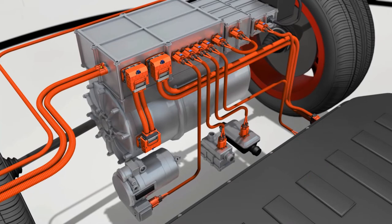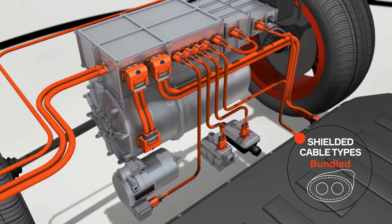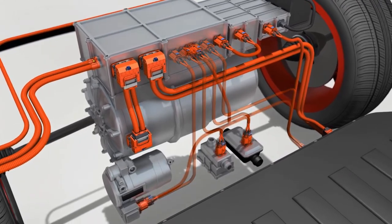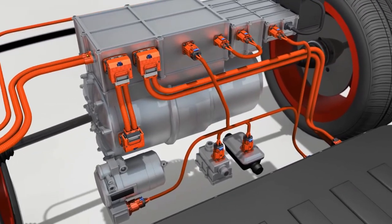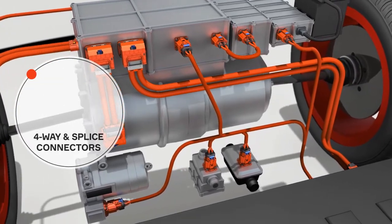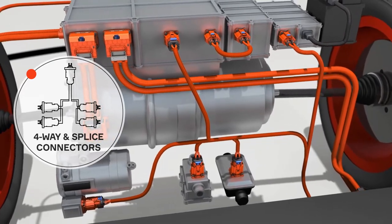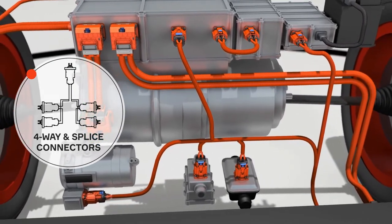Besides unshielded systems, we offer solutions for three shielding types: individual, multicore, and bundled. Aptiv understands that every millimeter of space counts in an EV architecture. Our exclusive 4-way splice connectors save critical space and cost. The 4-way splice's unique design enables OEMs to cut down on cabling.